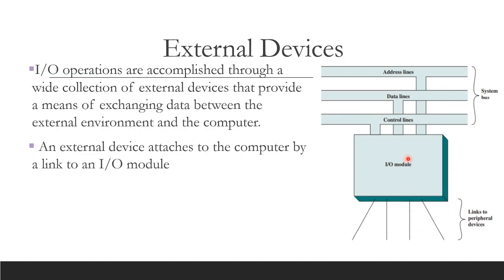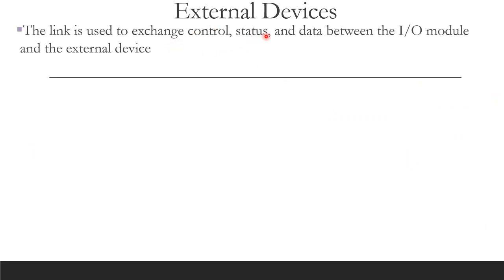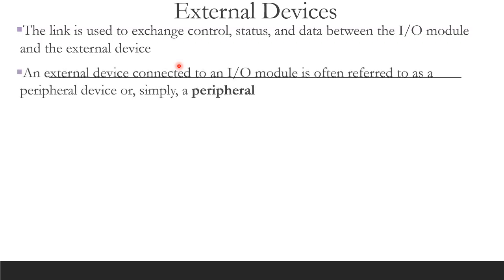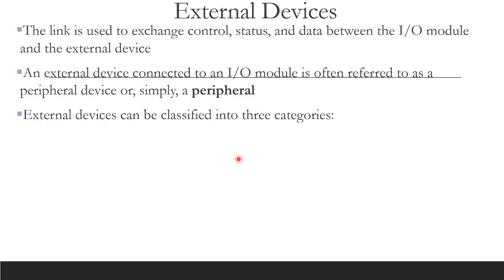The IO module acts as a mediator. The link between the IO module and the external device is used to exchange control, status, and data. An external device connected to an IO module is often referred to as a peripheral device, or simply a peripheral. External devices, or peripherals, are classified into three categories: human readable, machine readable, and communication devices.